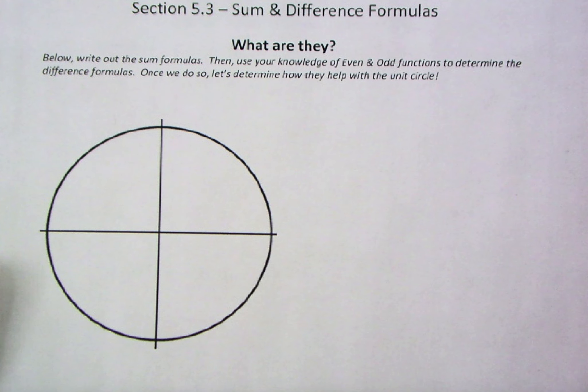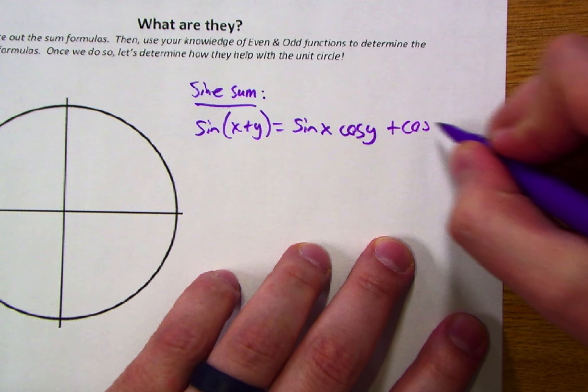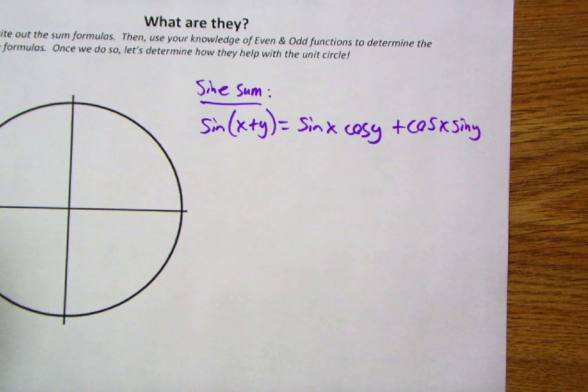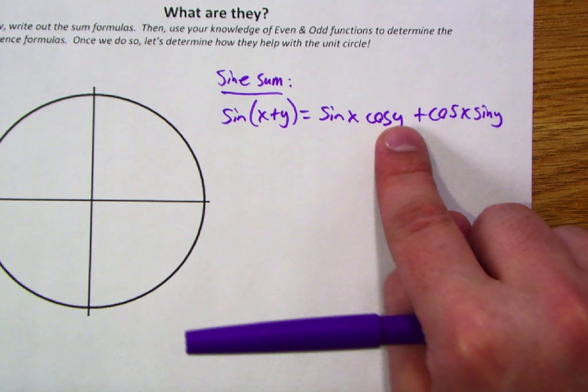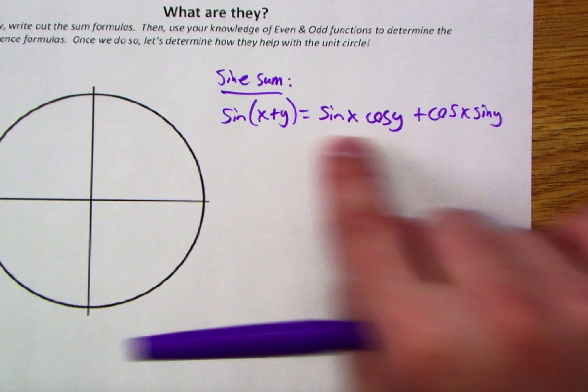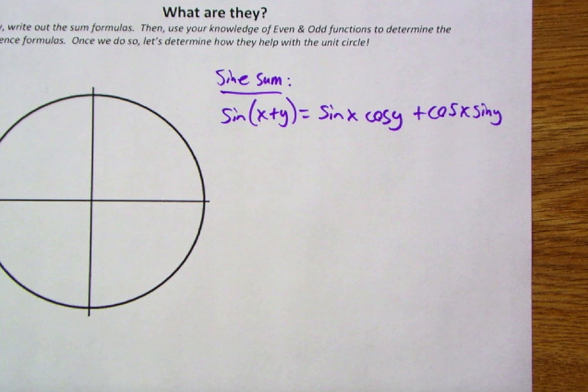You'll notice this entire front page is totally blank except for a unit circle that we can use later. I'm going to start off with the sine sum formula. For the sine sum formula, what it tells us is that sine of x plus y is equal to sine of x cosine of y plus cosine of x sine of y. This allows us to take two known angles and deal with them separately using multiplication and addition to create the idea of a sum.